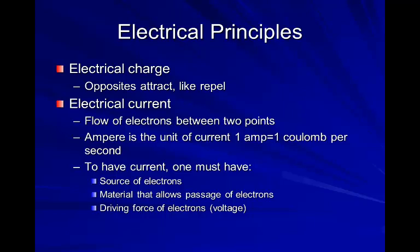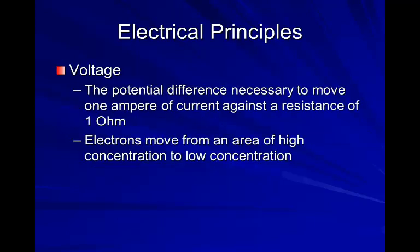To have a current, one must have a source of electrons, a material that allows passage of electrons, and the driving force of electrons — or voltage. Voltage is the potential difference necessary to move one ampere of current against a resistance of one ohm.